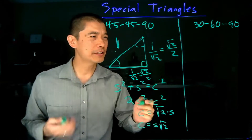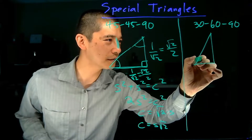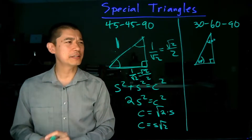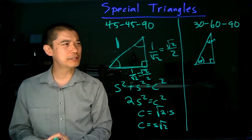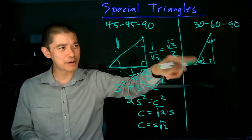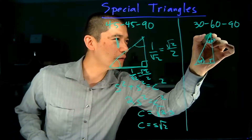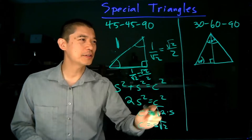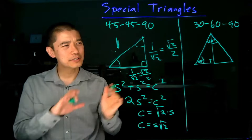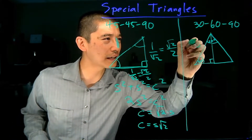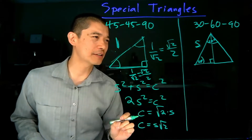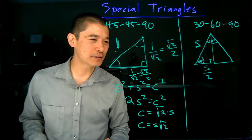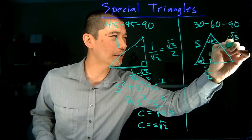For the 30-60-90 triangle, we set things up in a similar way: a 60-degree angle, a 30-degree angle, and a right angle. To find the side lengths, we use a clever trick — take a copy of this triangle and place it alongside, which gives us a 60-degree angle on both sides, making the whole thing a 60-degree angle and forming an equilateral triangle. So if the hypotenuse is length S, the shorter leg is S over 2. Using the Pythagorean theorem, the longer leg works out to be the square root of 3 over 2 times S.